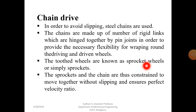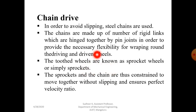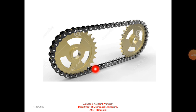Chain drive is intermediate between belt and gear drives. Gear drive gives more velocity ratio, but belt drive gives less due to slip. Chain drive lies between belt and gear drive — it has some features of belt drive along with some features of gear drive. The sprocket is a toothed wheel with a special tooth profile to avoid slipping.